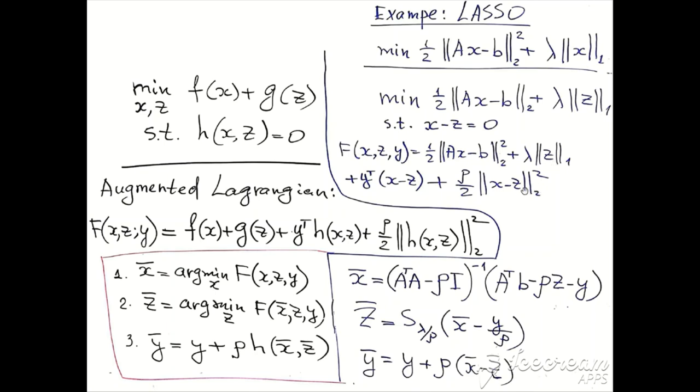That's why for every component Z_i, this will solve a one-dimensional scalar optimization problem, and the solution can be achieved analytically. It's written here. We just take the difference between X bar and y divided by rho, the vector y divided by the scalar penalty parameter rho, and apply the so-called soft threshold function.